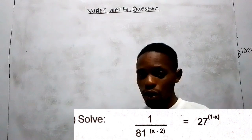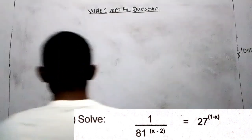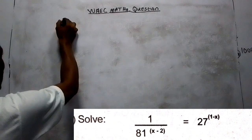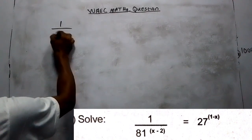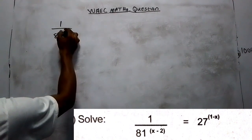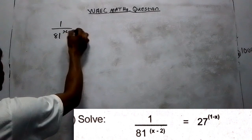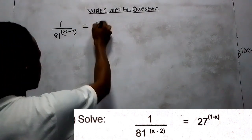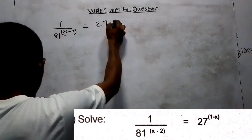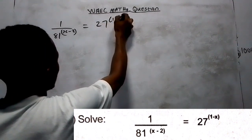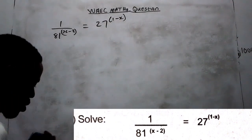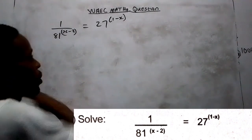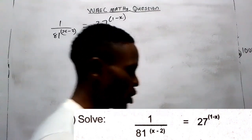You can see the question on display on the screen. We are told to simplify: 1 over 81 to the power of (S minus 2), equal to 27 to the power of (1 minus S). So we are told to simplify this indices question.